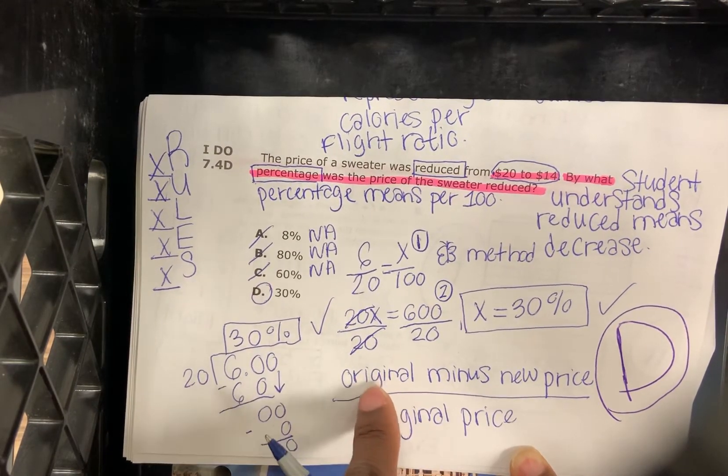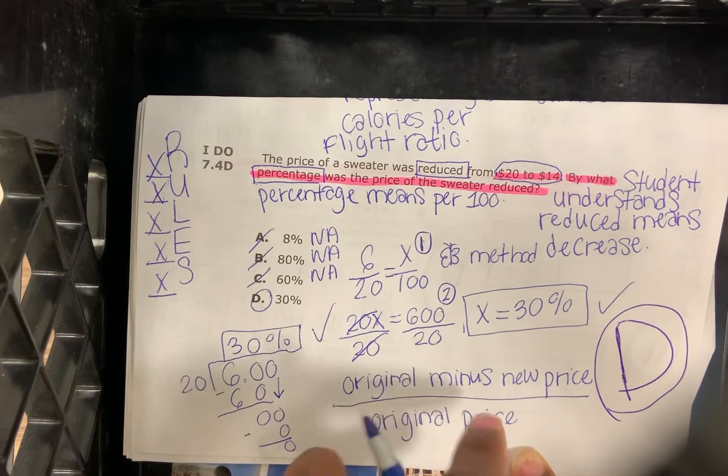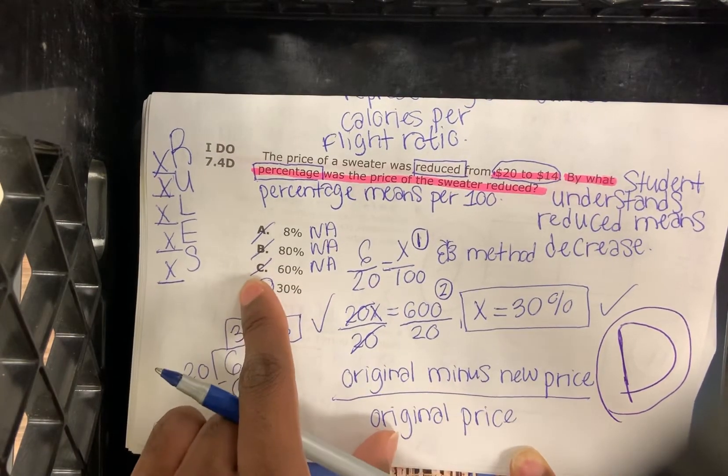The formula is the original minus the new price over the original price. The correct answer is D as in dog.